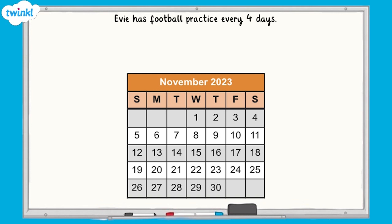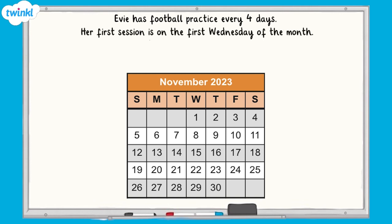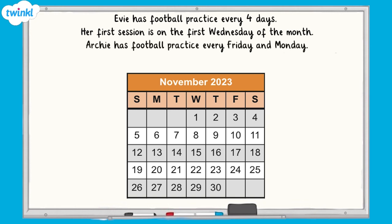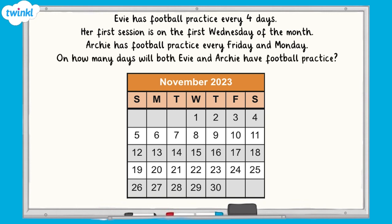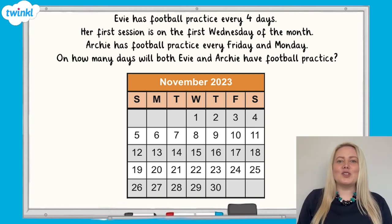I think that you're ready for a challenge now. Evie has football practice every four days. Her first session is on the first Wednesday of the month. Archie has football practice every Friday and Monday. On how many days will both Evie and Archie have football practice in November? Pause the video now to have a go.